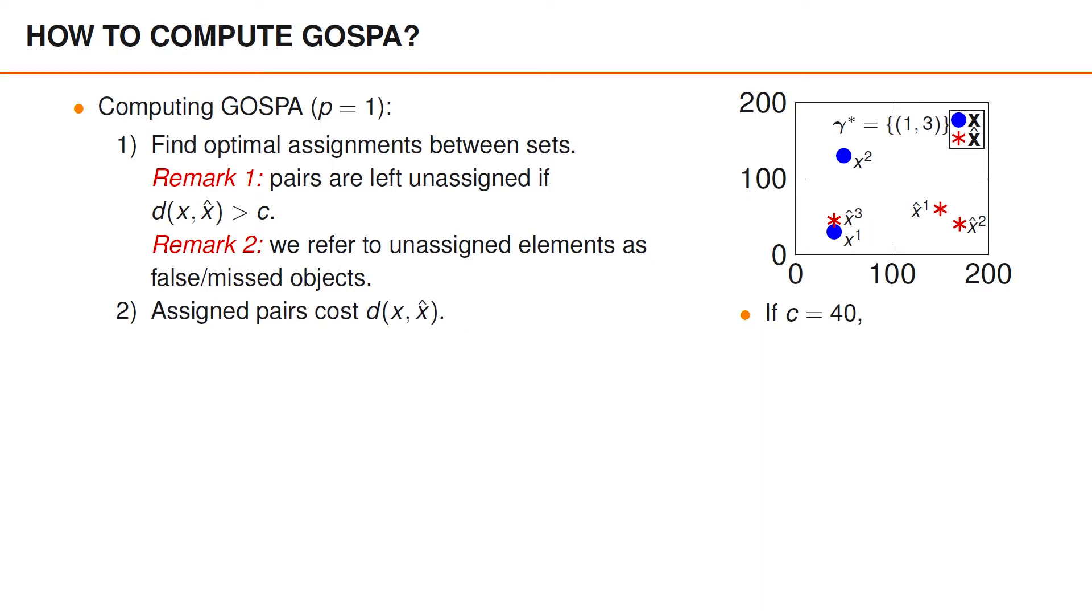The cost for assigned pairs is the distance between the two assigned vectors. We use the Euclidean distance here, but you can use another metric if you want. We previously referred to this as the localization error. Finally, the cost for unassigned elements is C over 2. In the example to the right, the Euclidean distance between X1 and X hat 3 is 15. And apart from that, we have three missed and false objects in total. GOSPA is therefore 15 plus 3 times C over 2, which is 75.